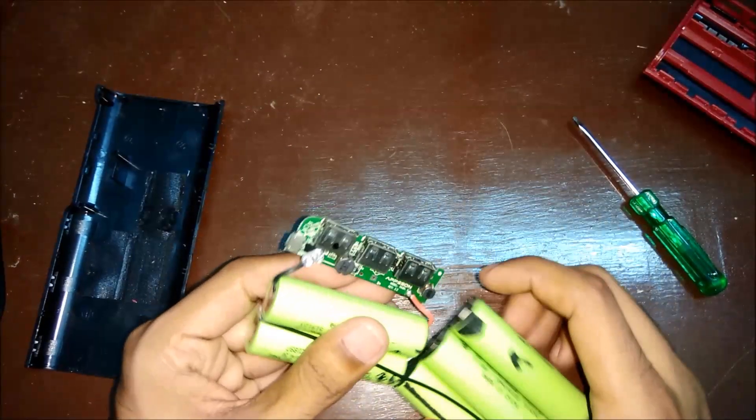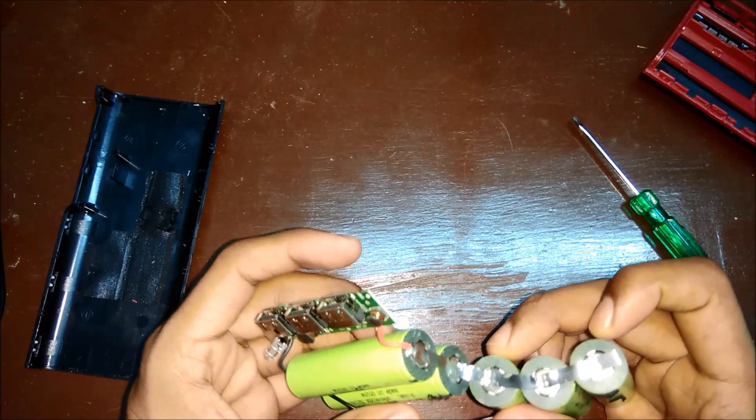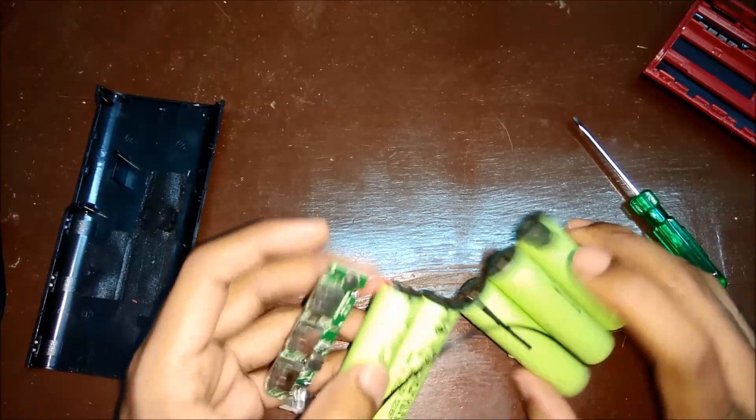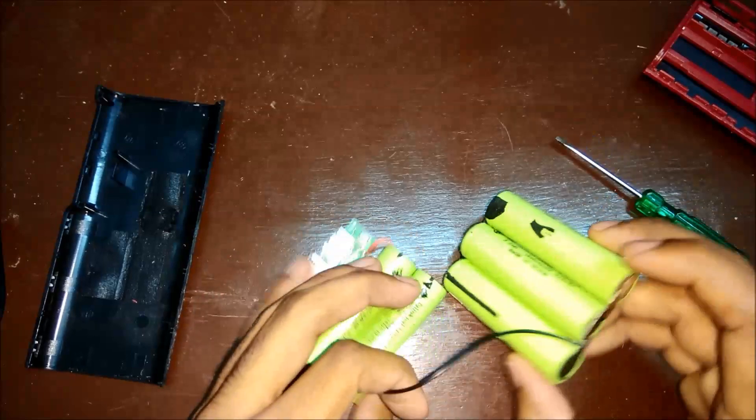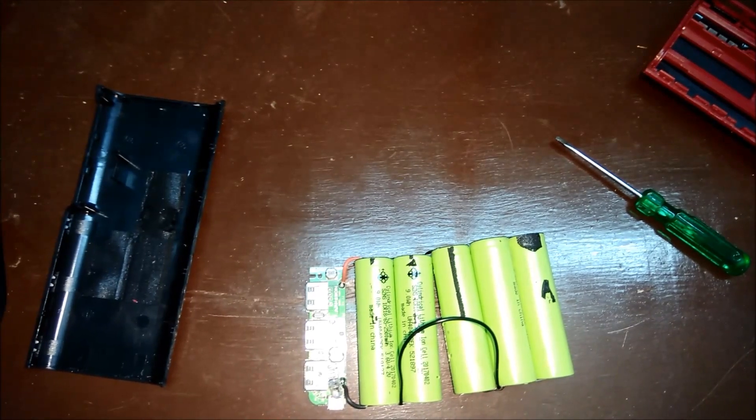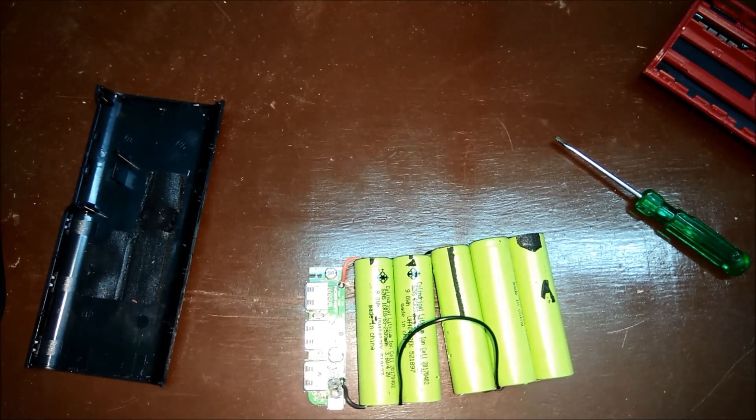So this is how the power bank looks inside. As you can see, there are 5 batteries each of 2,500 mAh and all are connected in parallel. The problem with connecting batteries in parallel is, even if one battery is not working and is dead, then all the other batteries also start discharging.